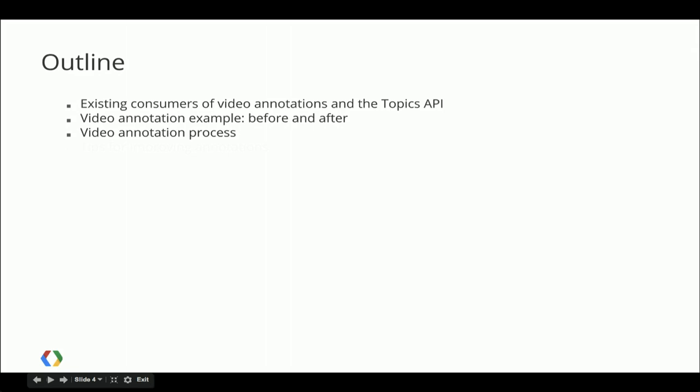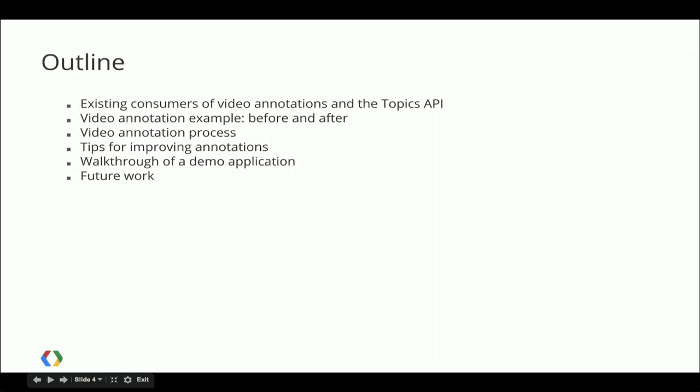Understanding that, we'll go back to my first example and explain how I was able to improve the annotations. And then we'll walk through an integration between the Freebase API for getting related topics and the YouTube Data API to find content on YouTube. Finally, Philip's going to talk about work that his team's been doing that will give you more Freebase annotations, and hopefully we'll see it in the API real soon.